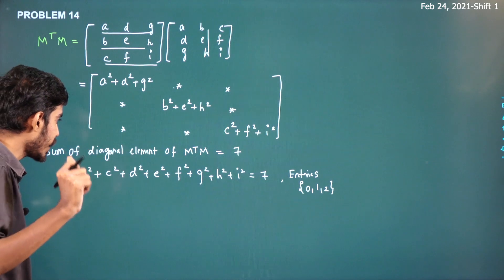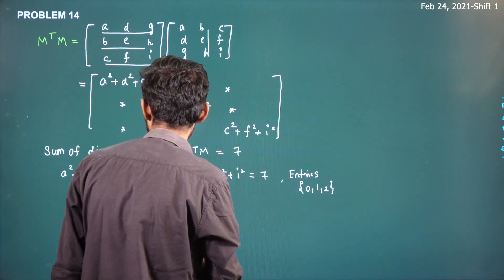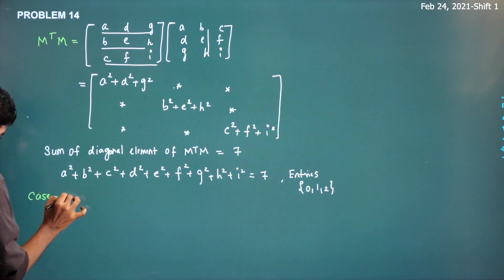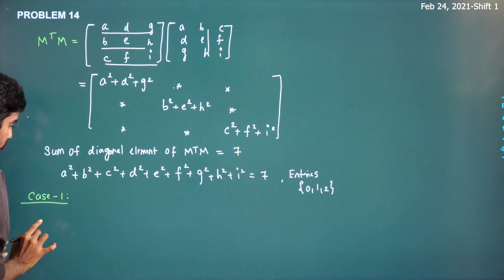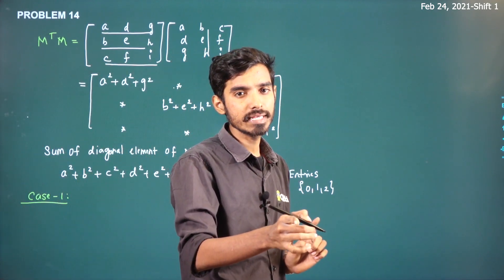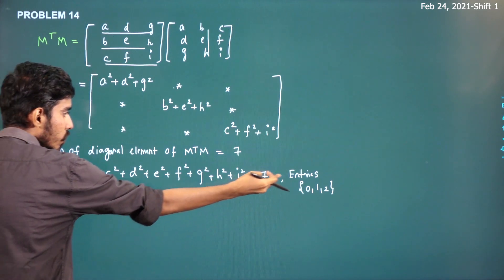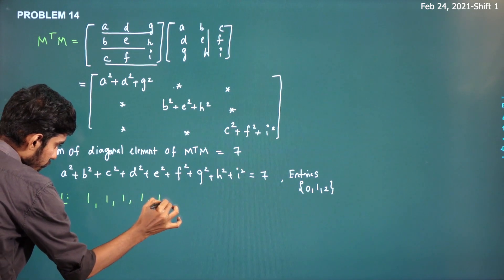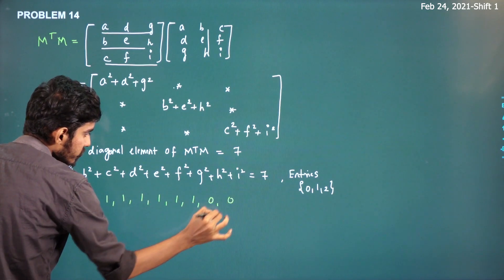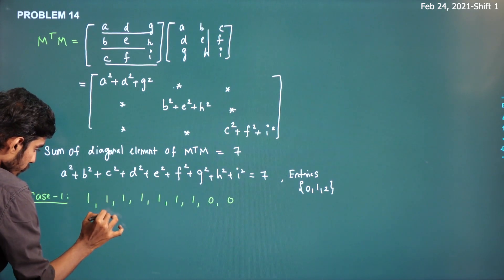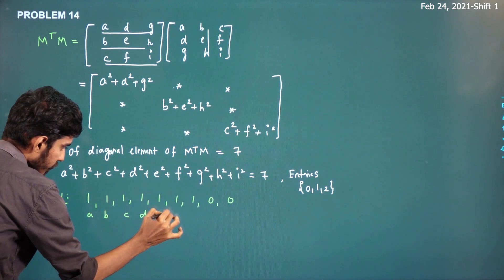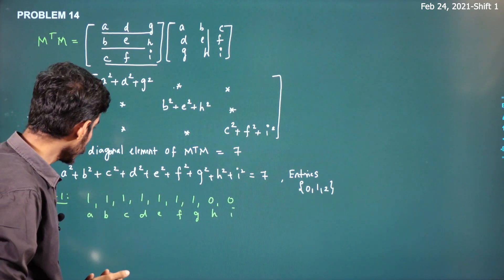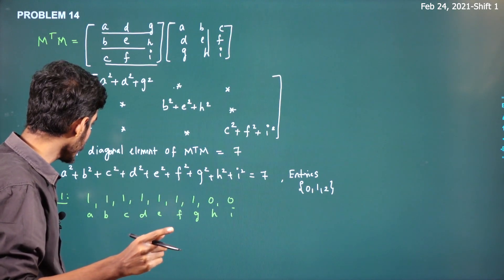If you look at the possibilities, in case 1: seven entries are 1 and two entries are 0. That gives us 1² × 7 + 0² × 2 = 7 + 0 = 7. So seven 1s and two 0s is one valid case. There is also another case to consider.